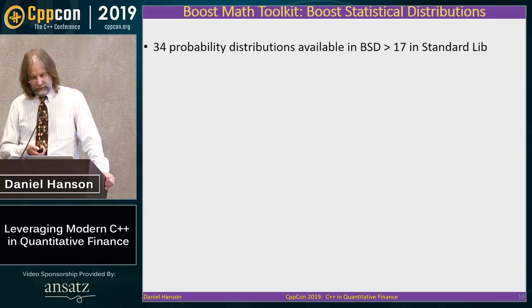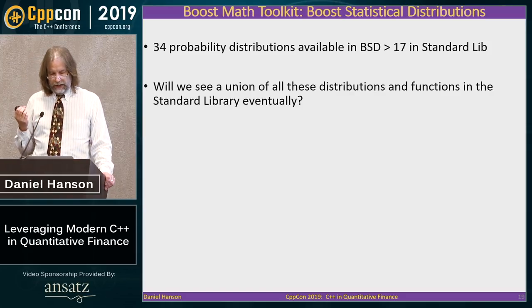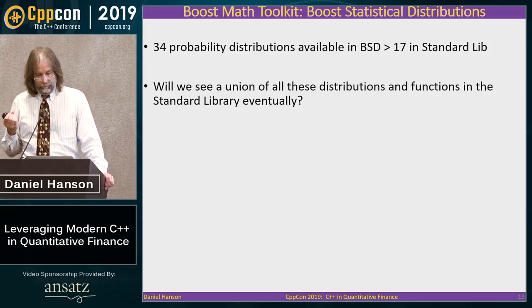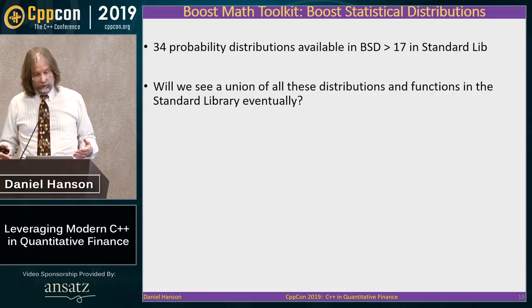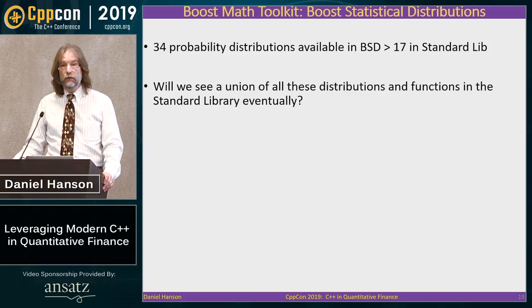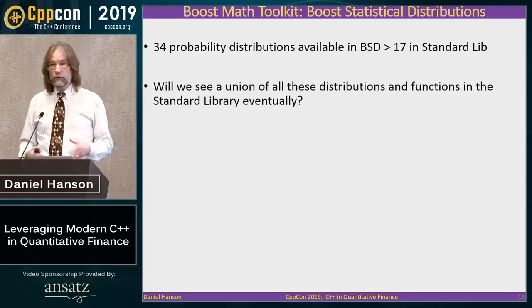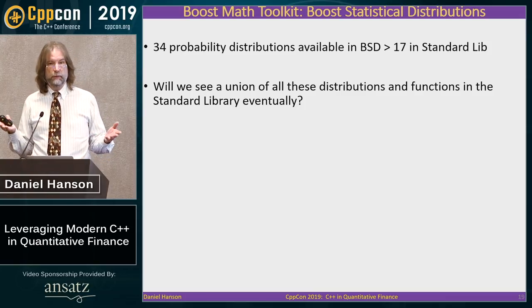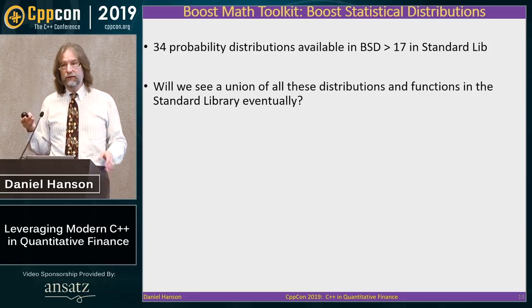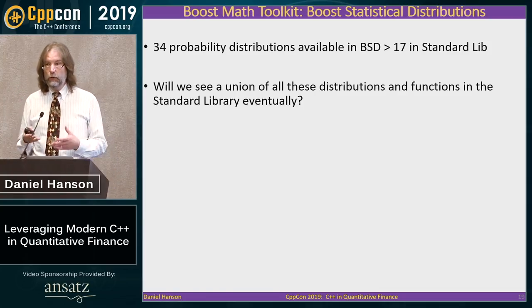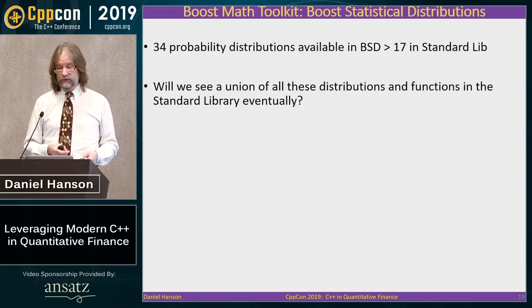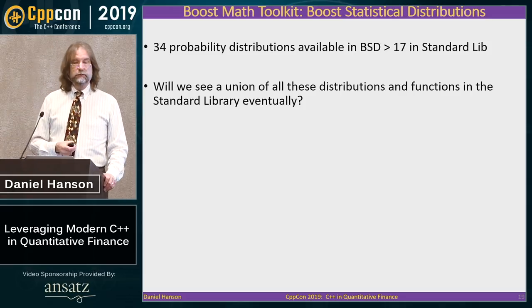This begs a natural question. I count 34 probability distributions in Boost versus 17 in the standard library. The standard library gives us random number generation; Boost gives us the usual functions we need. In R, for a new distribution to go into base R or an approved package, it must include all four functions — PDF, CDF, quantile, and random — or it'll be rejected. In practice we need all four, so it would be nice to have it all in one place with all 34 distributions. Anyway, if anyone's listening.